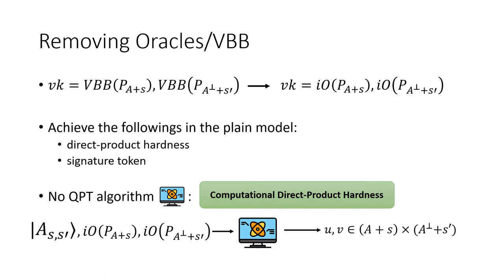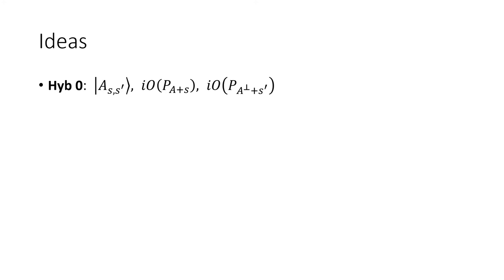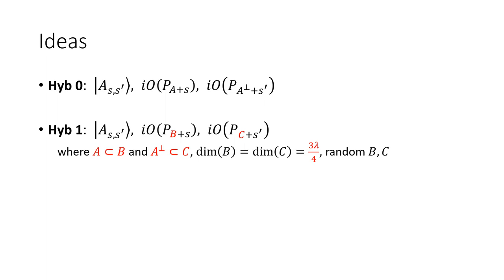Formally, we want to prove the following security: there is no efficient quantum algorithm that, given a coset state and two IO-obfuscated membership checking programs, can produce vectors in both cosets. In the original game, we have a coset state and two obfuscated programs. In the next hybrid, we replace the underlying subspace with B and C, where B is a random superspace of A with dimension 3λ/4, and C is a random superspace of A-perp with dimension 3λ/4. The indistinguishability between hybrid 0 and hybrid 1 uses subspace hiding obfuscation.